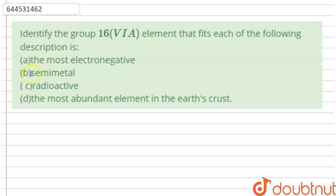The question here asks us to identify the Group 16 elements that fit each of the following descriptions. We have been given four descriptions: the most electronegative, semi-metal, radioactive, and the most abundant element in the earth's crust.